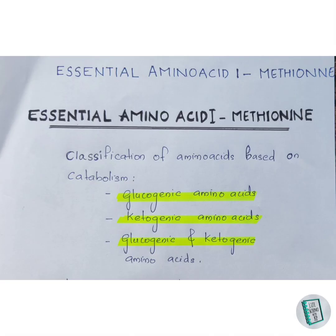Hello guys, welcome to the video. Today we will be discussing the synthesis and degradation of methionine. But before going to the core topic, we need to understand two terms related to amino acids: glucogenic and ketogenic nature. Amino acids can be classified as glucogenic, ketogenic, or both, and this classification is based on the type of intermediate produced during their catabolism.